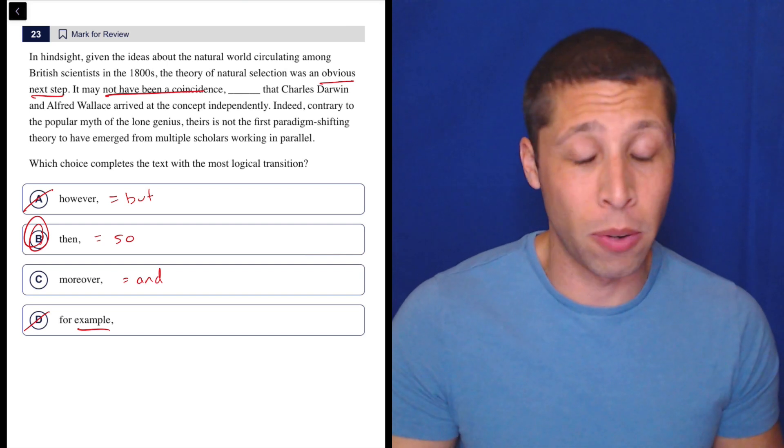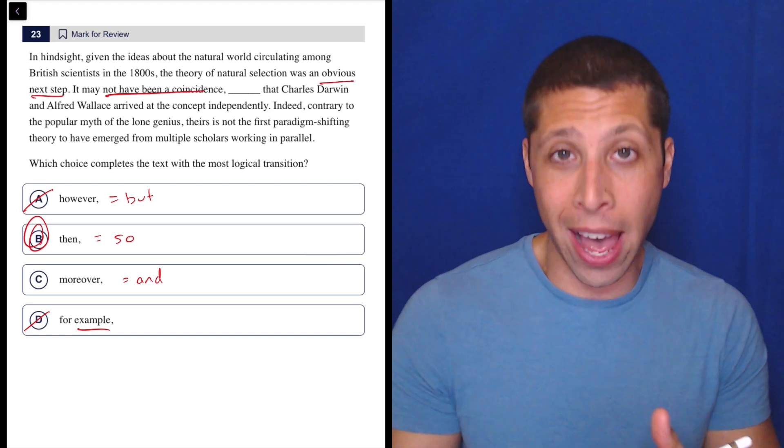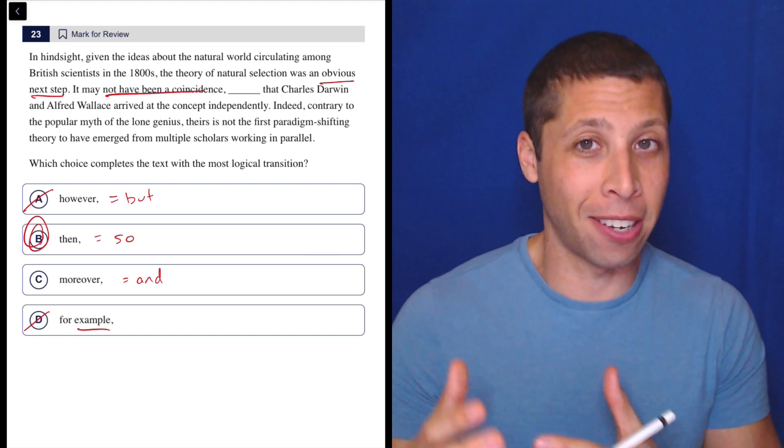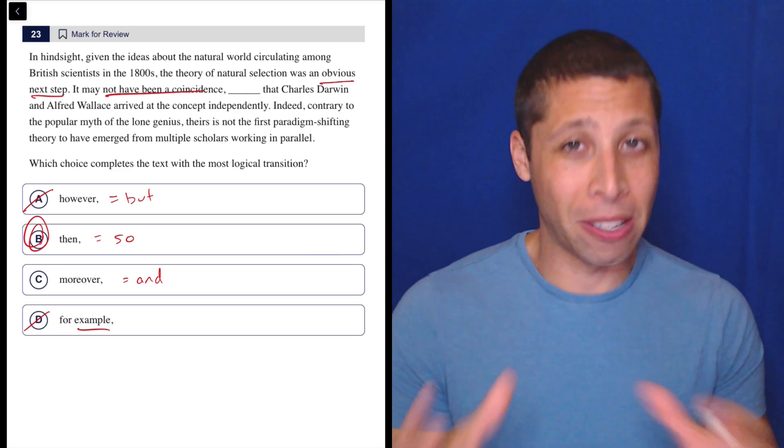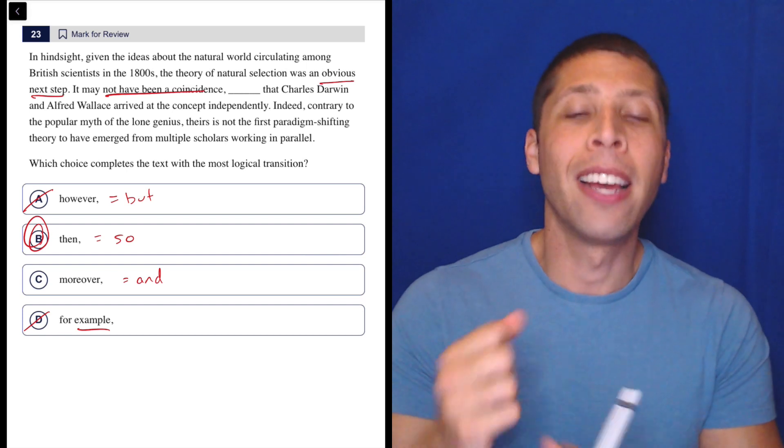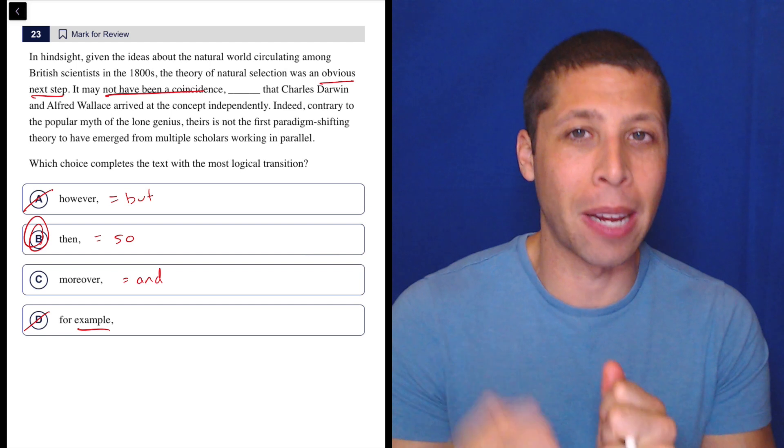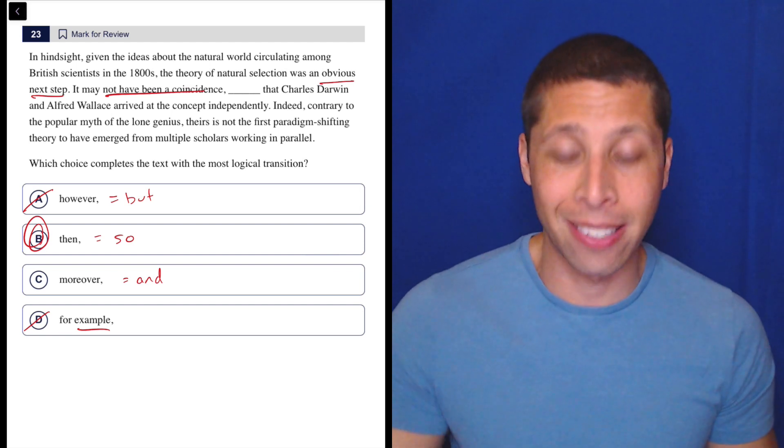And I feel like if you got this question wrong, that's probably what you did. But you have to remember that the word then can behave as a so. It just depends. It depends on the context. And they're not that different. It's not going to get two different meanings. It is a cause and effect word, a so word. But it sometimes has this little extra something about time passing and events happening in sequence.